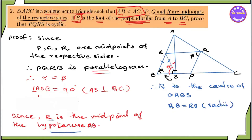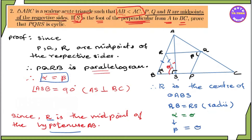Alpha is equal to this angle value. So PQRS is a cyclic quadrilateral. Therefore, PQRS is cyclic.